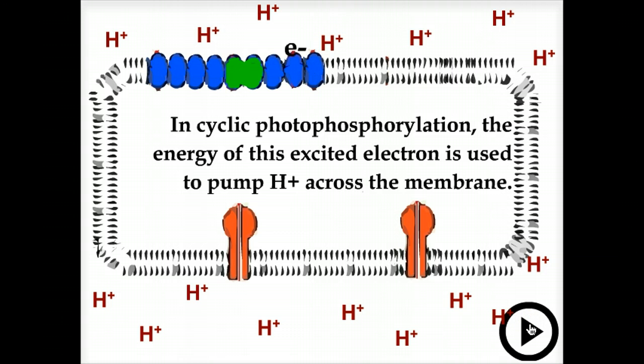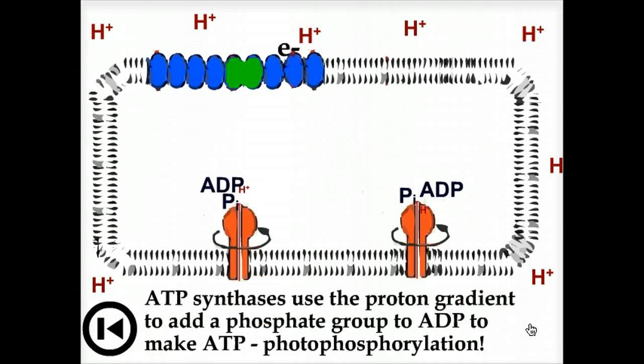In cyclic photophosphorylation, the energy of this excited electron is used to pump hydrogen across the membrane. A hydrogen ion gradient is formed.